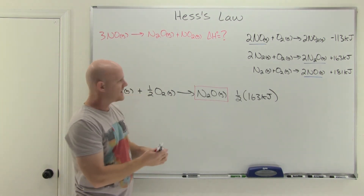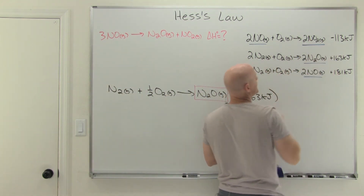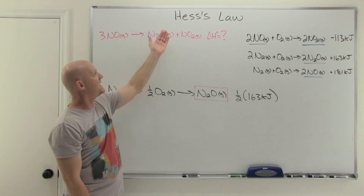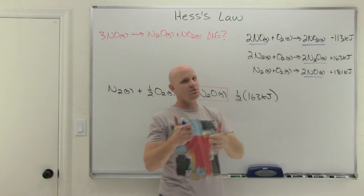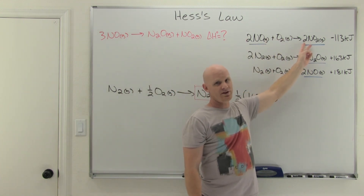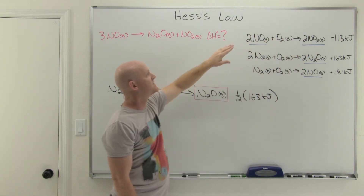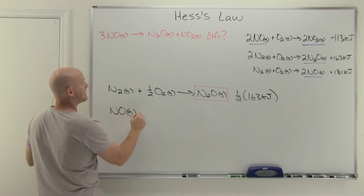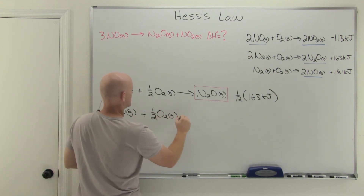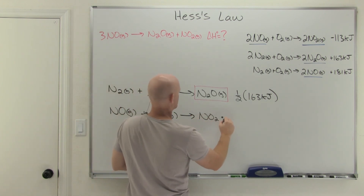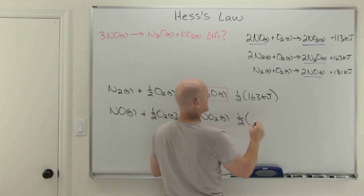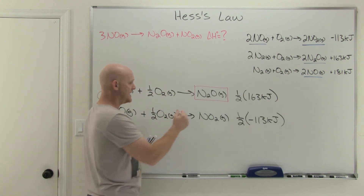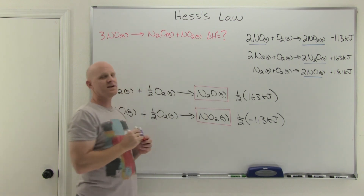Now dealing with NO₂ gas: the only place it shows up in the desired reaction is as one mole on the product side. In the provided reaction, NO₂ is a product but with two moles, so we cut that reaction in half as well: NO gas plus one-half O₂ gas goes to NO₂ gas. Cutting it in half gives delta H equal to one-half of negative 113 kilojoules. This ensures NO₂ looks exactly as needed.